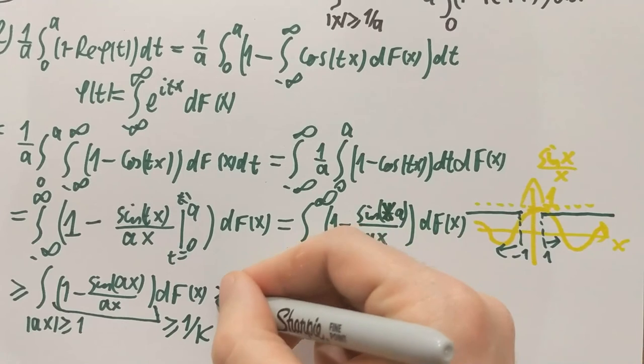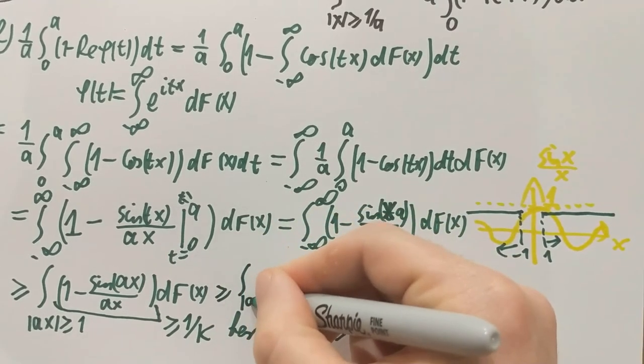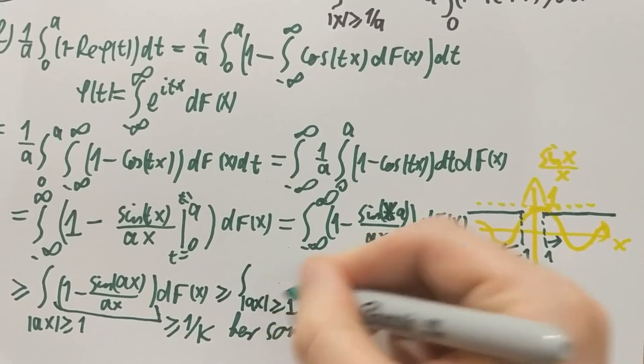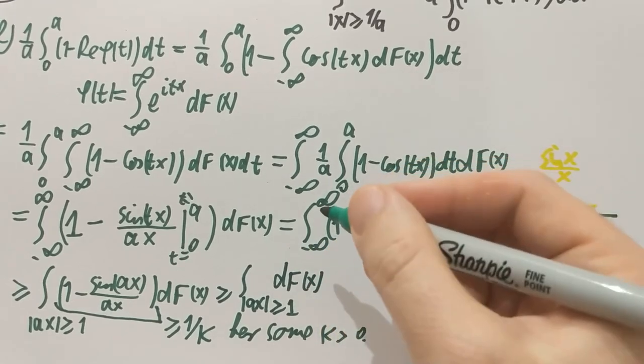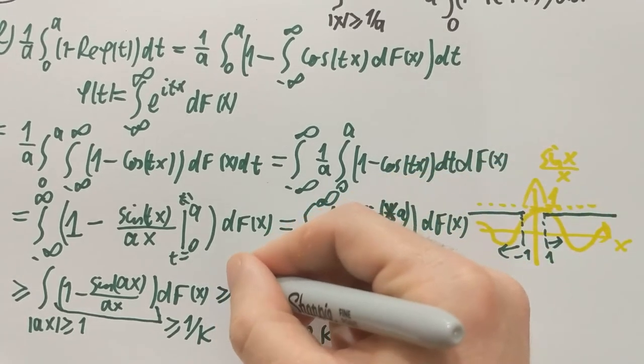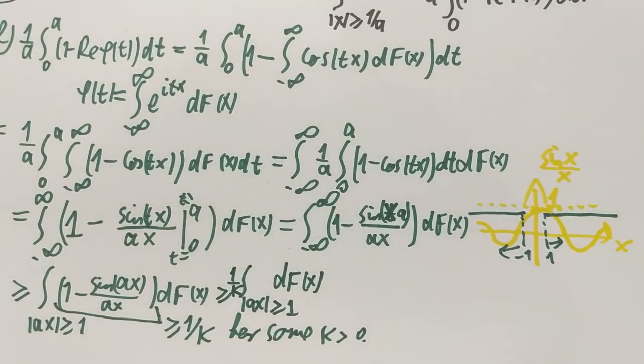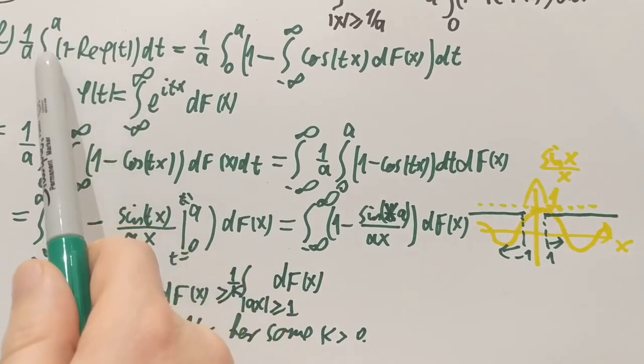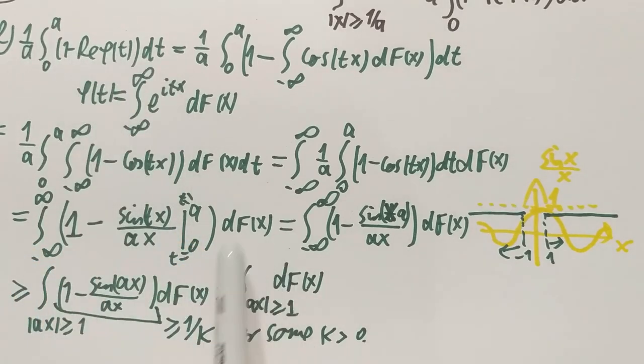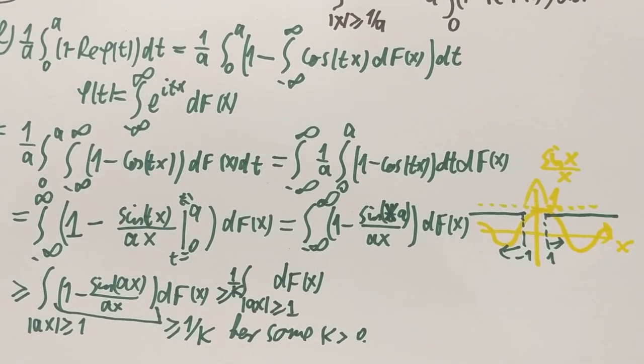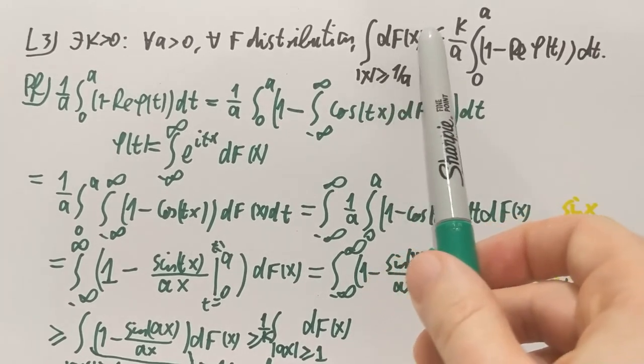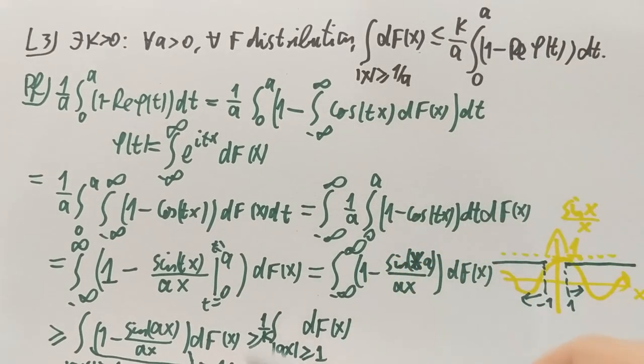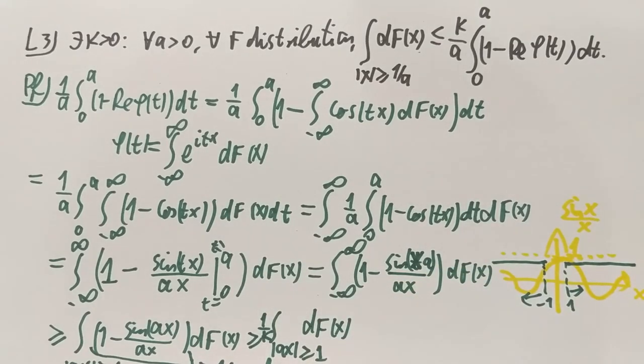That means that my integral is larger than or equal to the integration on that set, ax mod at least 1, of 1 times dfx. And the constant 1 over k, this constant here. And now if you compare the two sides of this inequality, what I started with was 1 over a times 1 minus the real part integrated. The right hand side is 1 over k integral of df. If you compare these two sides, that's exactly what this statement was about. So that's the lower bound for this. The k is actually over on the other side. Otherwise that's the statement we want.